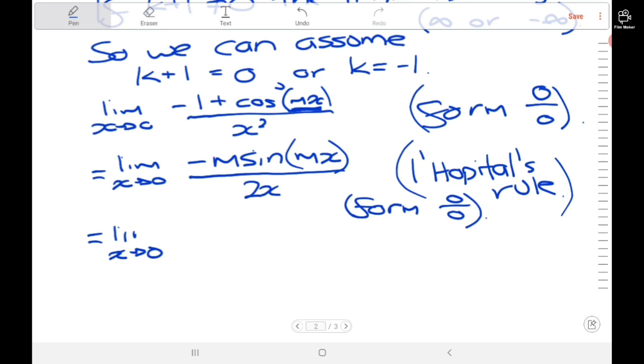Again, we differentiate the numerator. Sine differentiates to cosine, and using the chain rule for mx, we get negative m squared cosine of mx. In the denominator, 2x differentiates to 2.